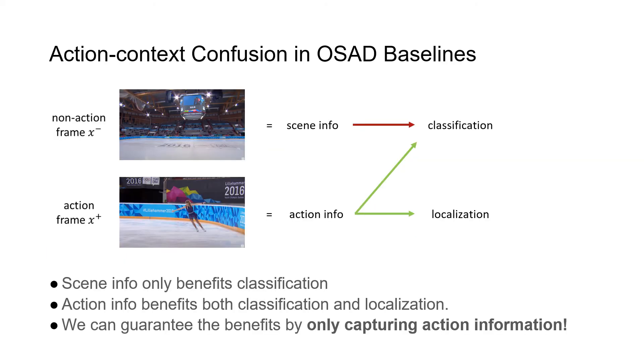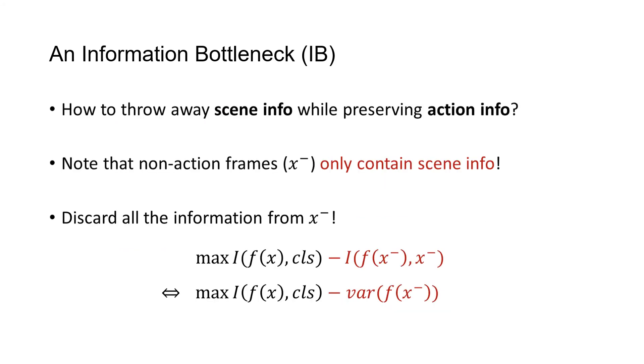Now, what about omni-supervised model? Our goal here is to separate action and context frames, and our method is to learn only action information and discard the scene information. So how can we do this? Actually, we can notice that the non-action frames only contain scene information. So a simple way is to discard the scene information by minimizing the information from all non-action frames. And this becomes an information bottleneck where we train the classification and meanwhile filter out the useless information in non-action frames.